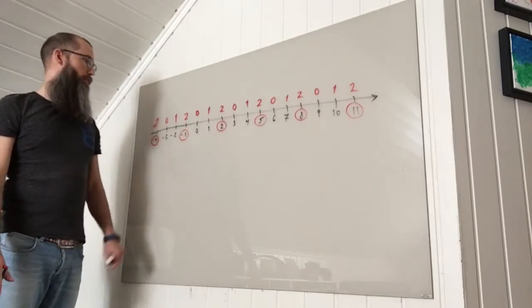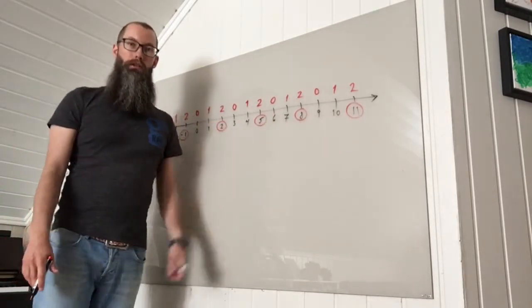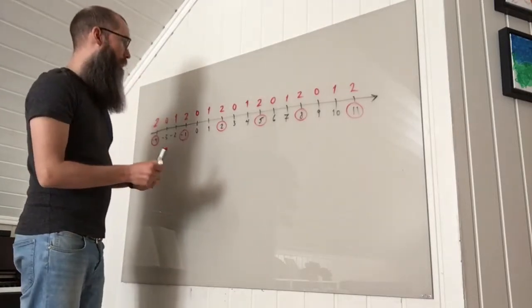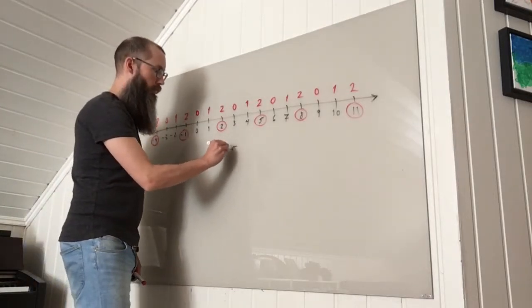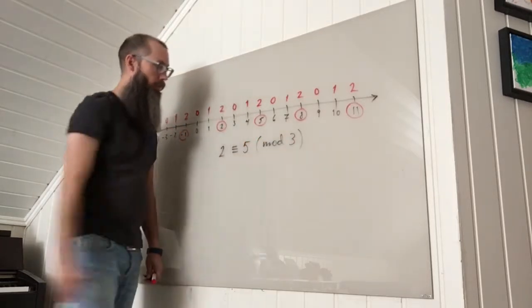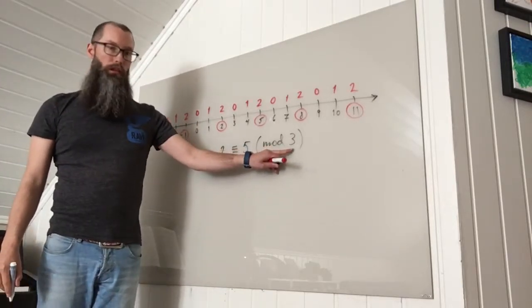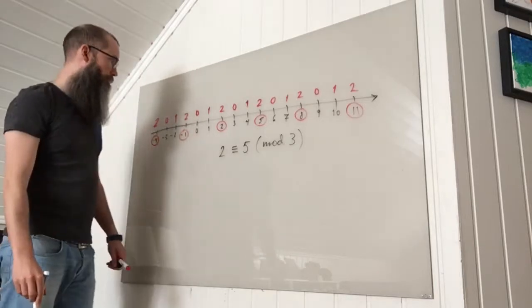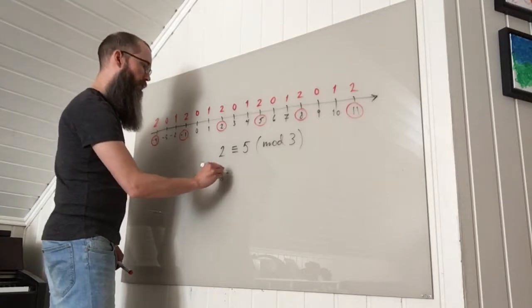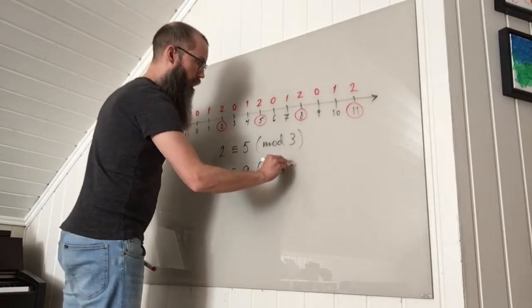The same is true for 1 and 4 and 7 and 10. They are also said to be congruent modulo 3. The notation is as follows. We write for instance 2 is congruent 5 and then in parenthesis mod 3. So this number 3 is called the modulus in this setting and it's also true that 6 is congruent 9 mod 3.